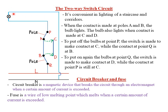To switch the bulb back on at point Q, B is moved to point D while P is still maintained at C. The current then flows from the live wire through Q to D, then through C to P, completing the path through the bulb to the neutral wire. That is how a two-way circuit operates — one switch at P and the other at Q, allowing independent switching from either location.